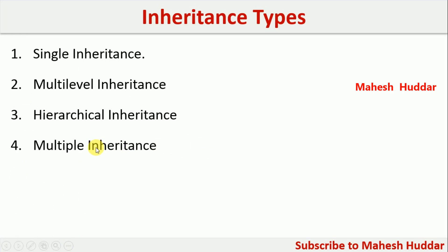There are four types of inheritance in Java. One is called single inheritance, the second one is multi-level inheritance, the third one is hierarchical inheritance, and the fourth one is multiple inheritance.